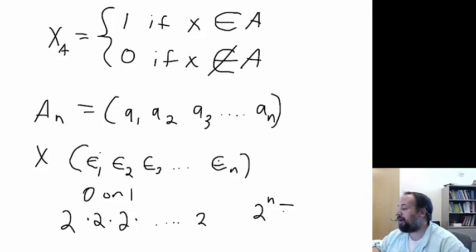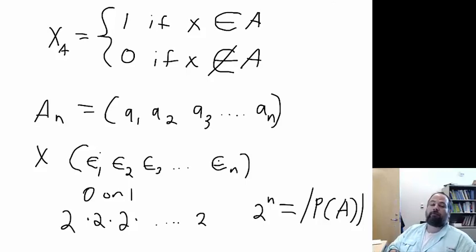That is how we prove the cardinality of the power set of set A. So the number of sets in the power set is two to the n. How do we know it's two to the n? Because of the characteristic function. That's the only way we use the characteristic function in this class.